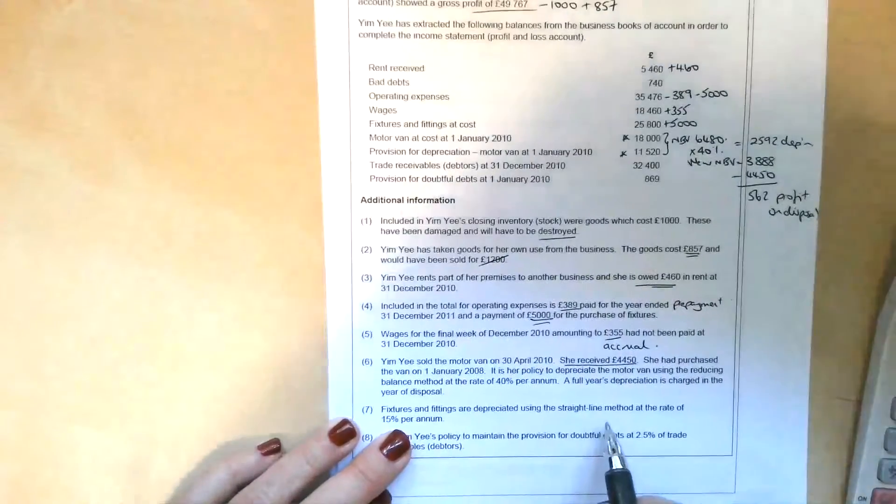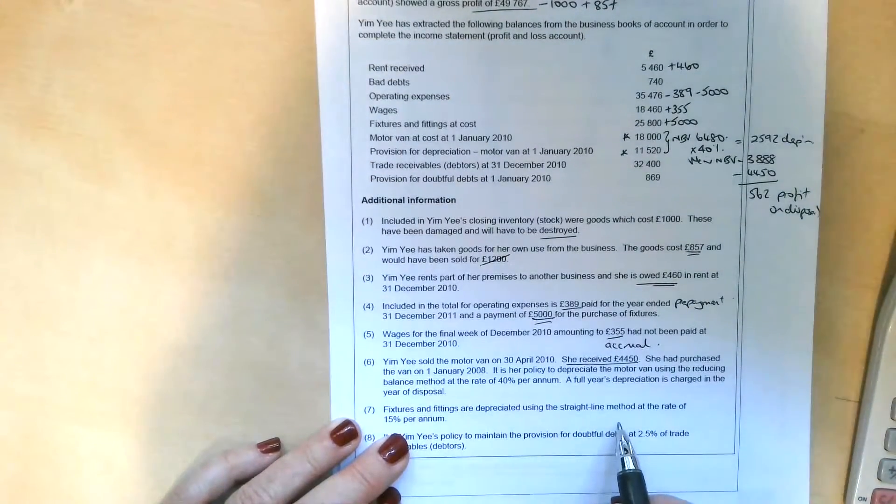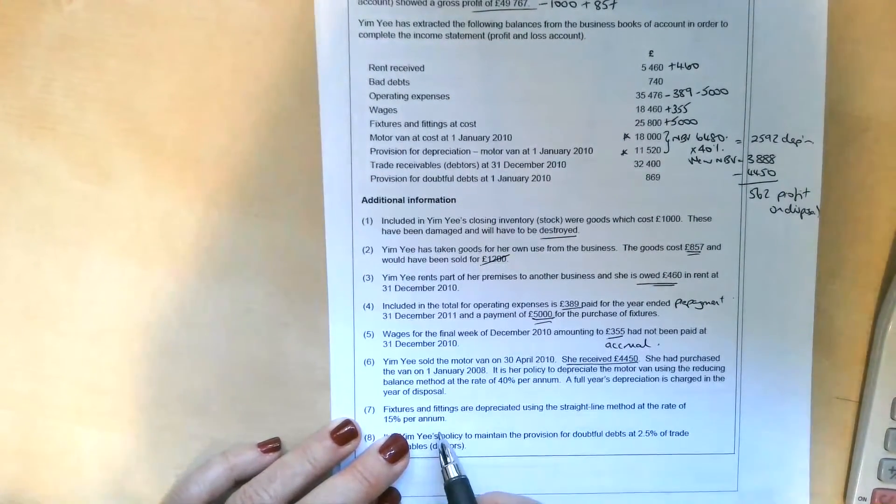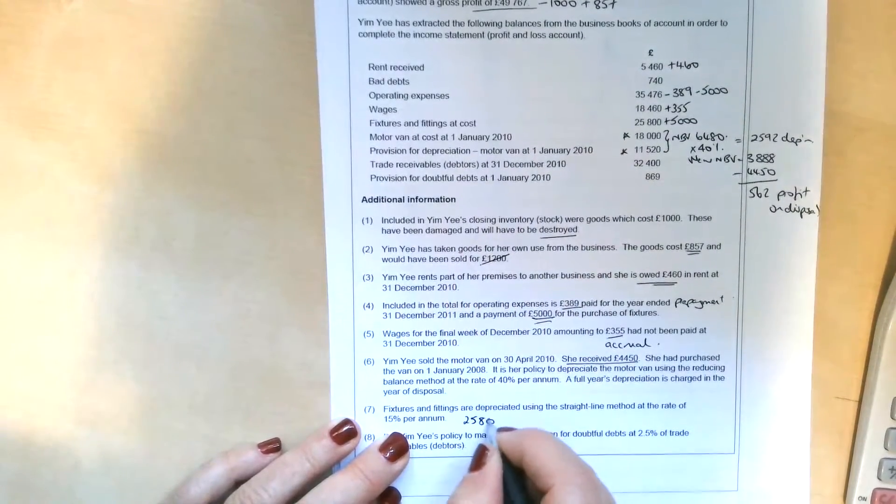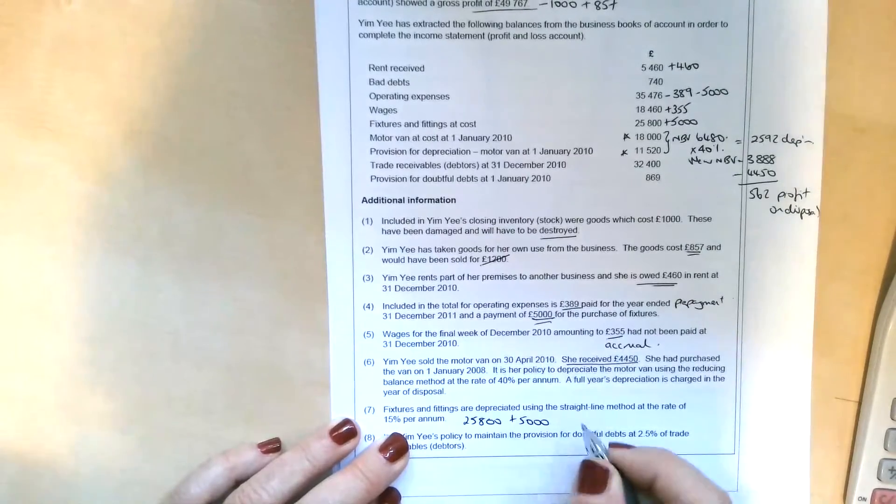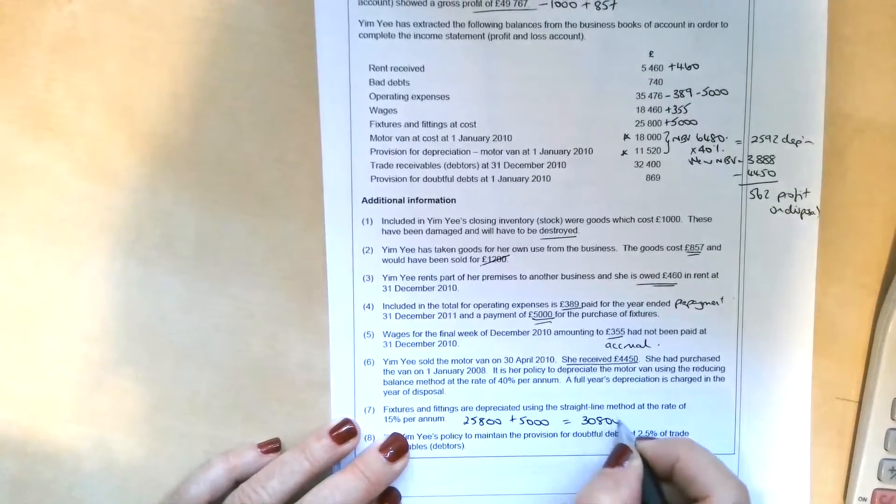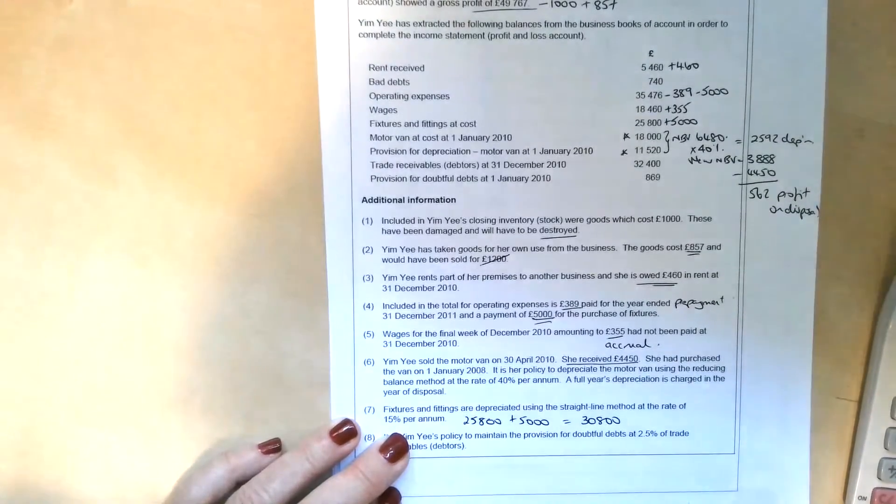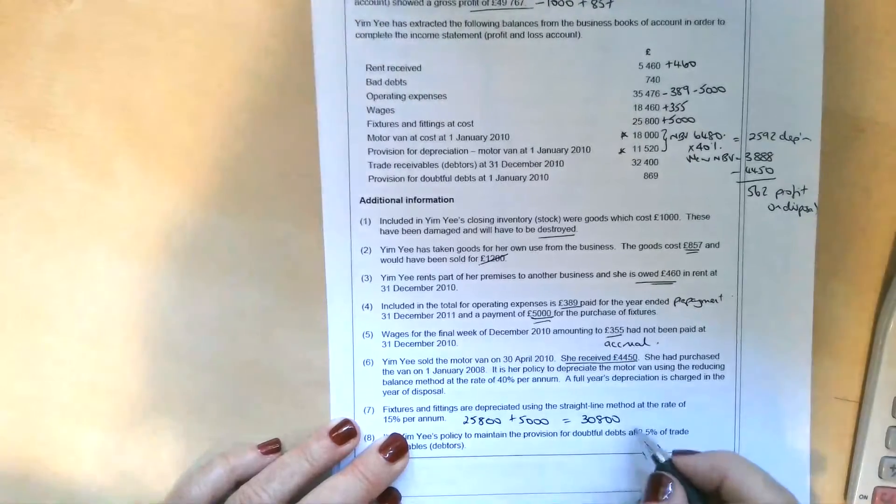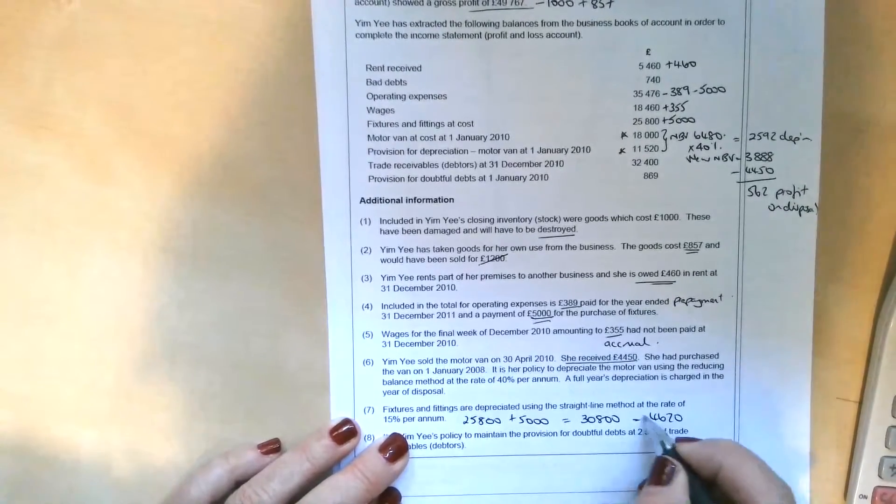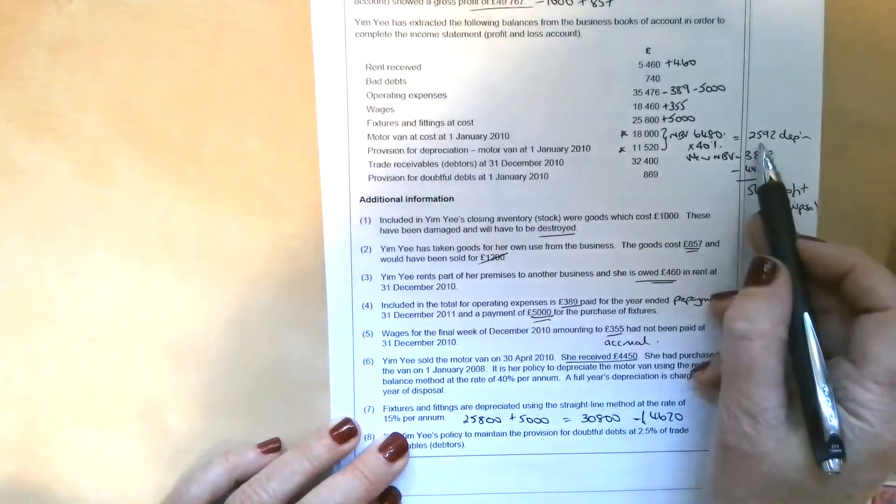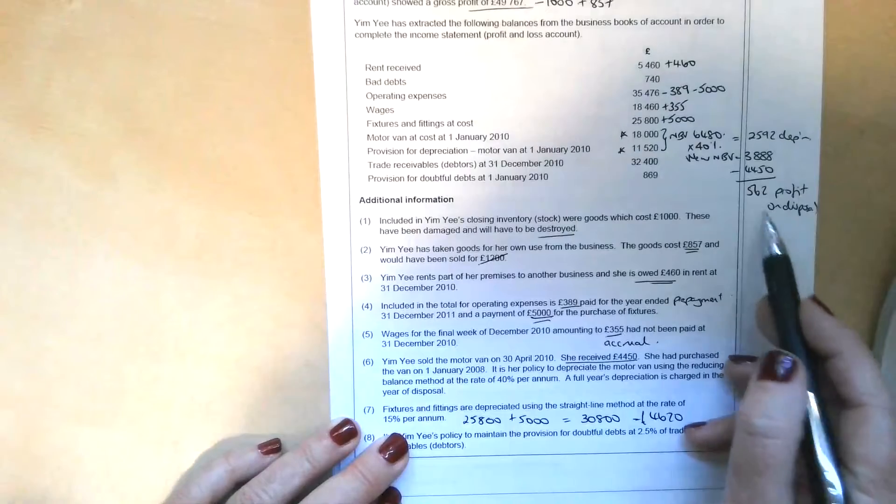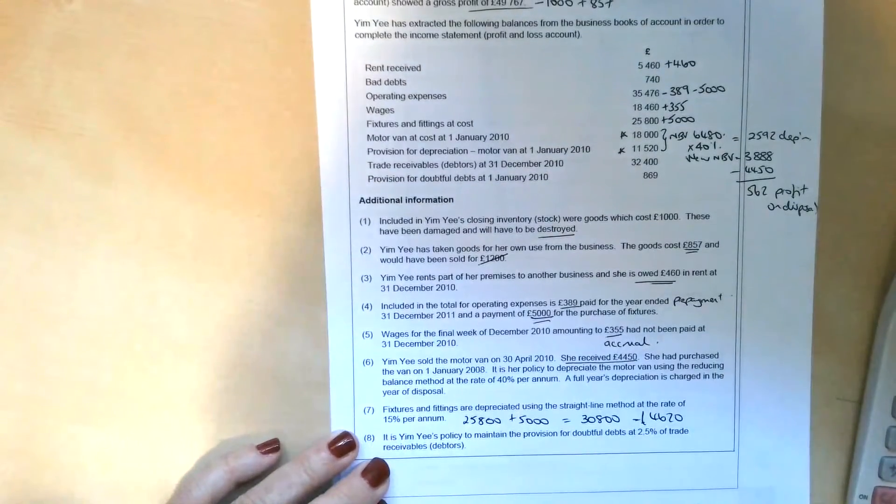Fixtures and fittings are depreciated using the straight line method. So we're going to need to work out depreciation and include that in our income statement as well. The fixtures and fittings at cost were £25,800 plus we have that £5,000 that have been put into purchases by mistake. So we're doing 15% depreciation on that. That's £4,620. So that's going to need to go into the income statement as well as the £2,592, both as expenses. And then the £562 profit on disposal will be other income.